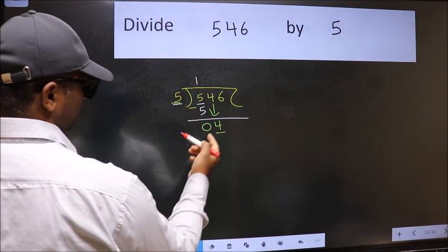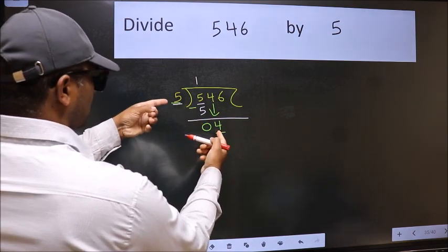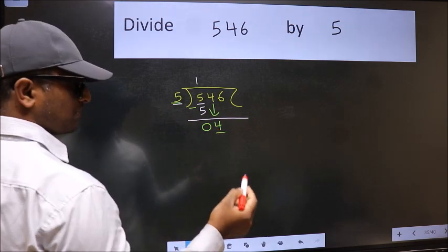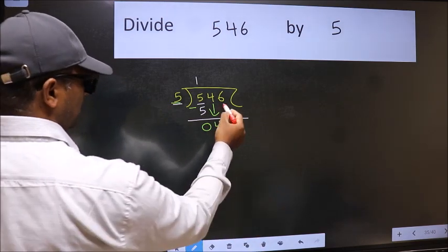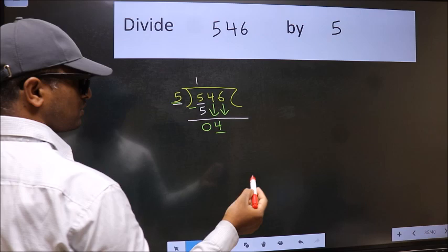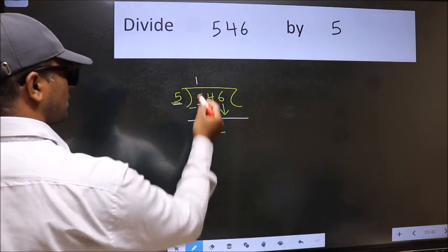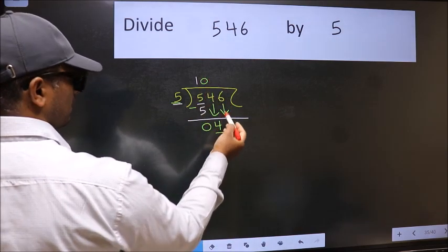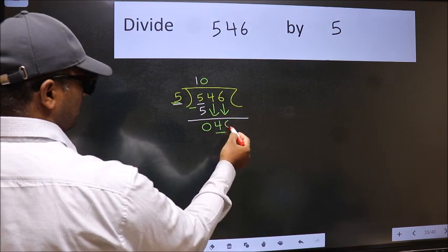4 is smaller than 5, so we should bring down the second number. And the rule to bring down the second number is we should put 0 here, then only we can bring this number down.